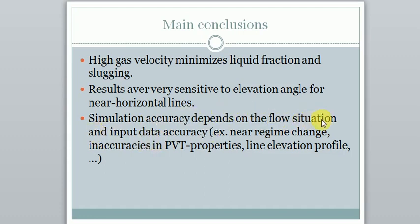Simulation accuracy depends on the flow situation. In some areas we saw we are pretty sure what flow regime we will encounter, while other times we are not. And so we can be near a regime change, then it's most uncertain. But there are also other inaccuracies we didn't really talk about in the PVT properties, for instance. If we don't know precisely which fluid we have, we do not know precisely which viscosities and densities and so on we have either. And we may not know how much liquid we have compared to gas. And the line elevation profile is not always well enough known. So any input data can be quite important, especially elevation profile when we are near horizontal flow.